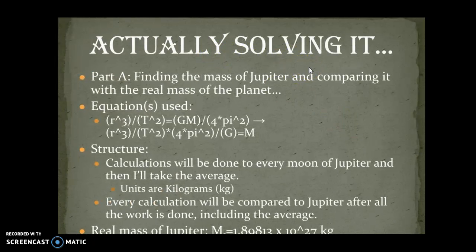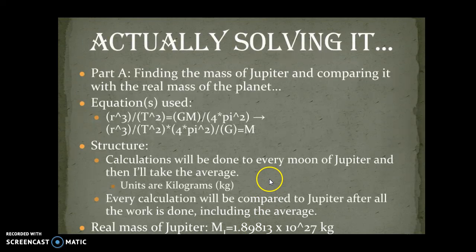So actually solving it, Part A is finding the mass of Jupiter and comparing it with the real mass of the planet. The equation used is Kepler's third law, which is r cubed over t squared equals universal gravitation constant times mass divided by 4 pi squared. And then I rearranged it so it all equals mass instead, because I'm finding the mass. The calculations will be done on every moon of Jupiter and then I'll take the average. The units used for the mass are kilograms. The real mass of Jupiter is 1.89813 times 10 to the 27th kilograms.